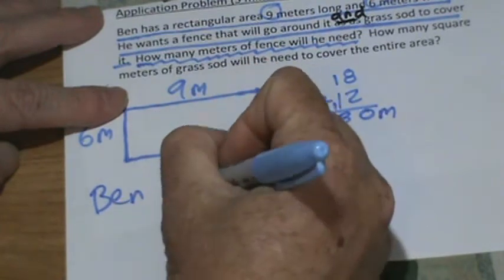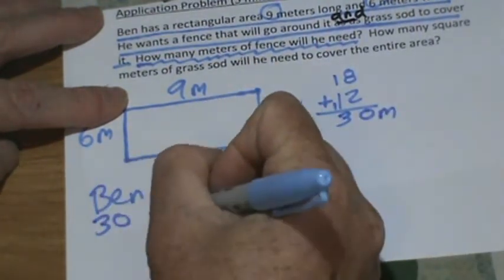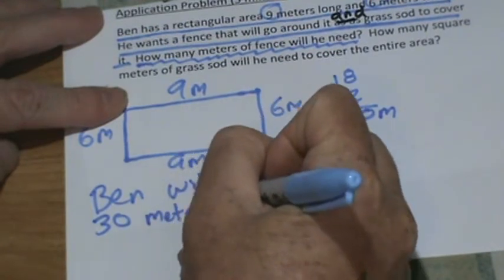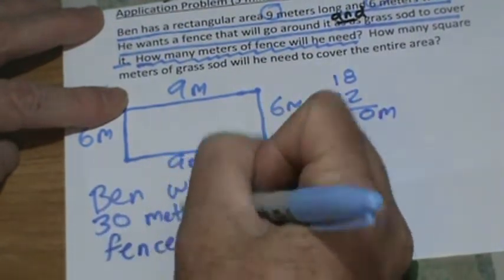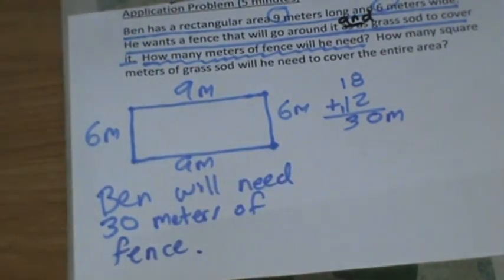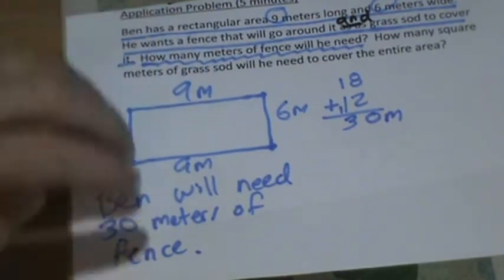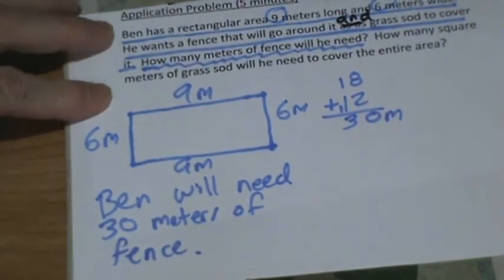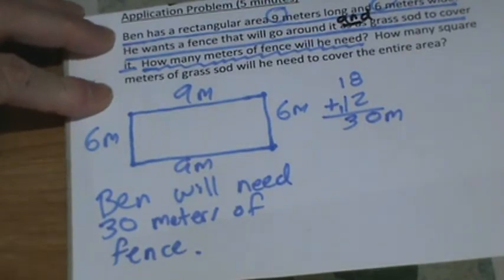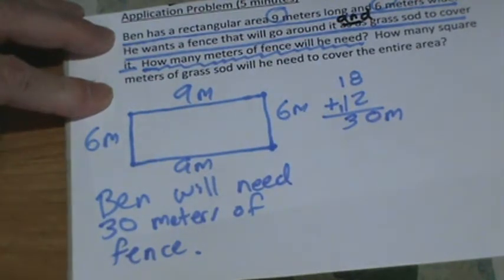So we can answer the question now. Ben will need thirty meters of fence. Go ahead and write that down. Remember in math we read, we draw, and then we write. Now how much grass sod will he need to cover? Remember, this is area — he's going to cover the area.